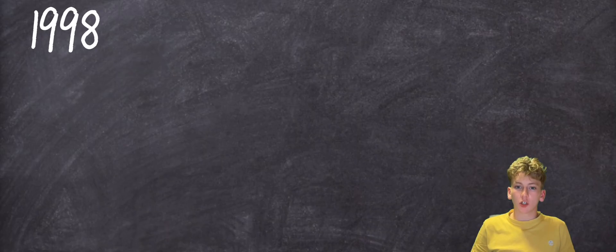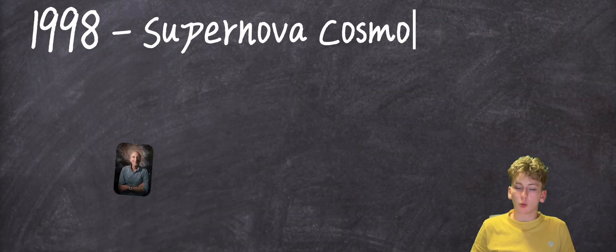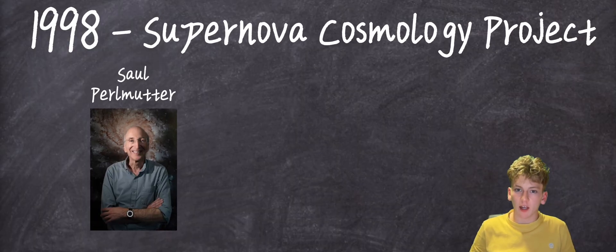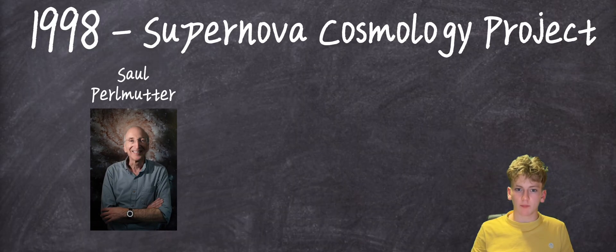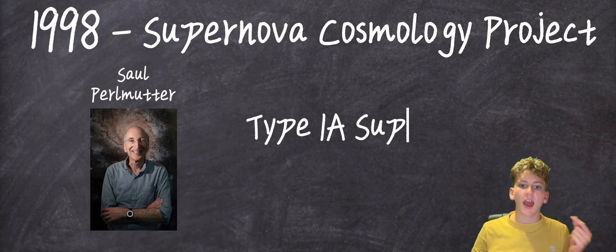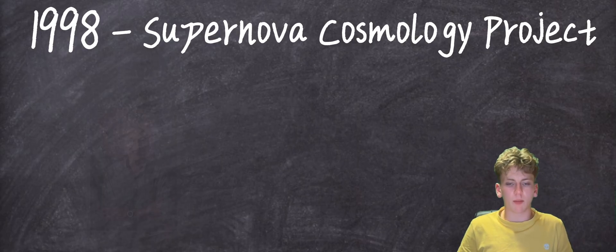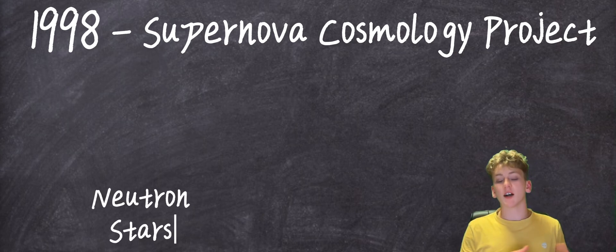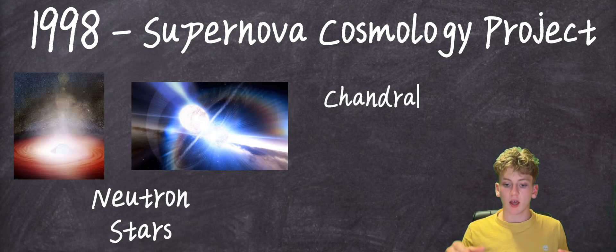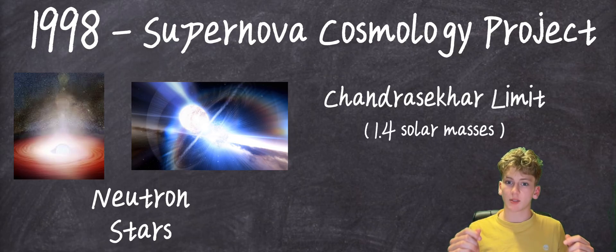The Supernova Cosmology Project, led by Saul Perlmutter, used a clever trick to observe the universe's expansion. They studied Type Ia supernovae, which are unique because they have extremely constant luminosities. Other supernovas can have drastically varying luminosities, but because Type Ia's are only formed from neutron stars at the Chandrasekhar limit, astronomers know with precise certainty how bright they're expected to be.